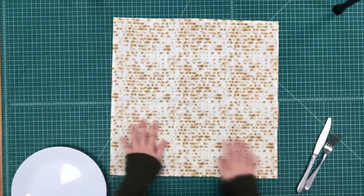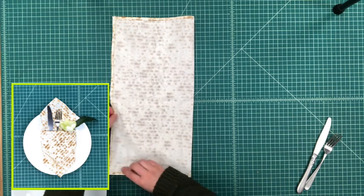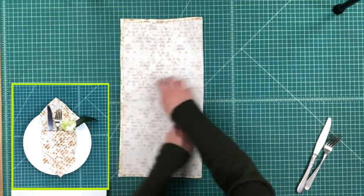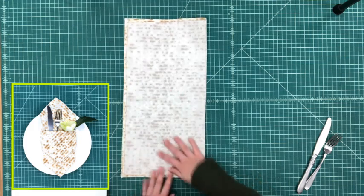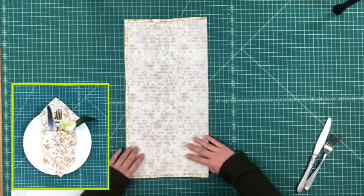So number 4 is called the diamond pocket. This one you start with the right side up and fold the right half over the left half. Now this one you have to make sure everything is lined up quite right otherwise the final look just doesn't look right.